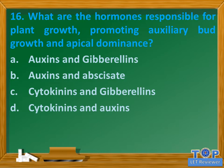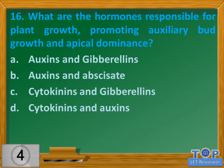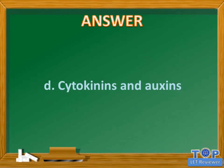Question number 16. What are the hormones responsible for plant growth, promoting auxiliary bud growth and apical dominance? A. Auxins and gibberellins. B. Auxins and abscisic acid. C. Cytokinins and gibberellins. D. Cytokinins and auxins. Answer: D. Cytokinins and auxins.